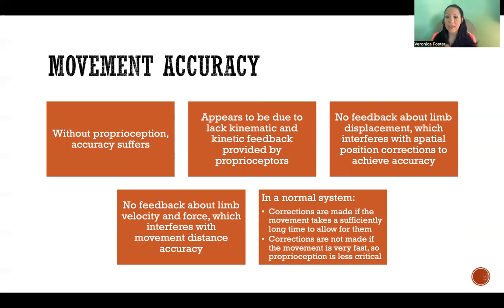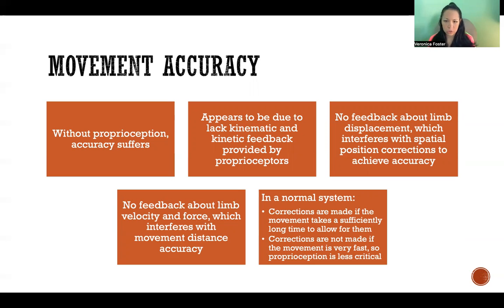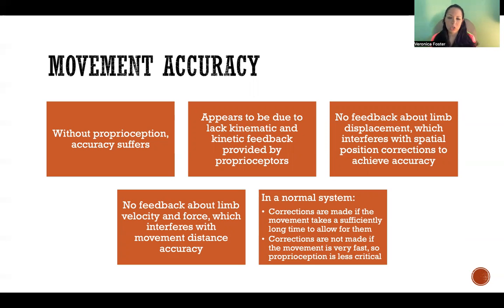When we are engaging in movement, the body is sending proprioceptive feedback back to the control center, and we use that feedback to make adjustments to the movement plan to be more accurate. Without proprioceptive feedback about limb displacement or where we are in space, we'll be less accurate in spatial position. Without feedback about limb velocity and force, we'll have difficulty estimating when we'll arrive at the target, so movement distance accuracy suffers.